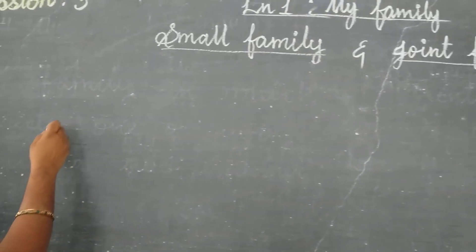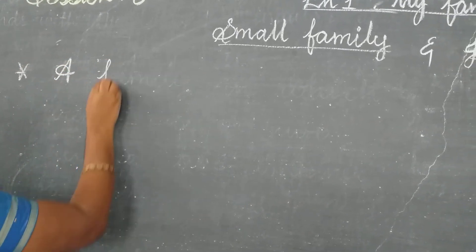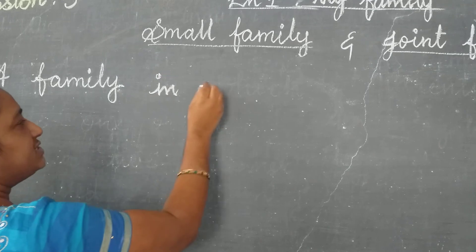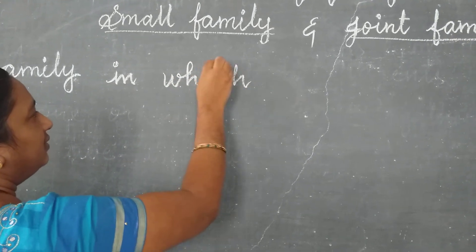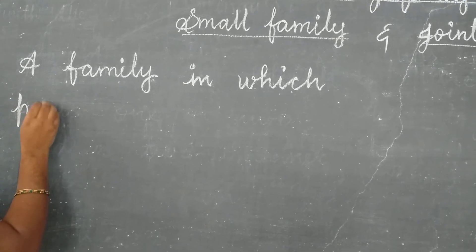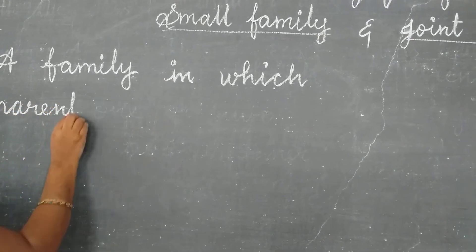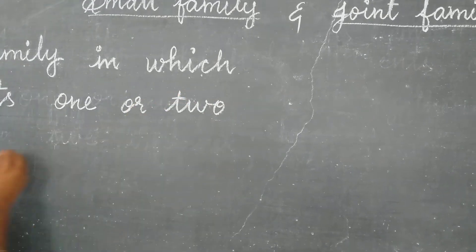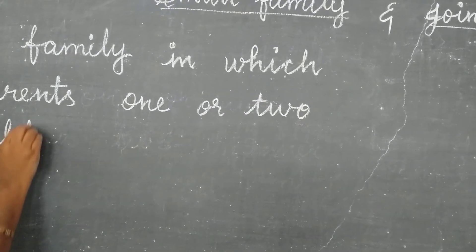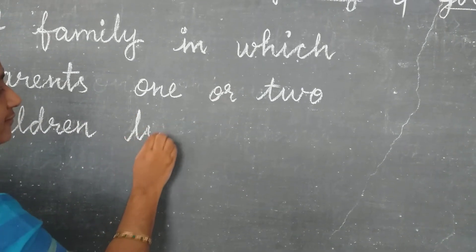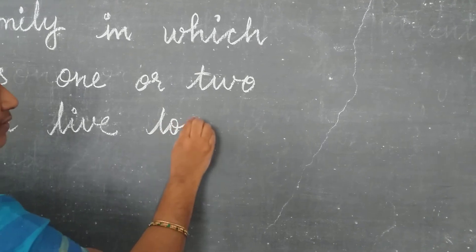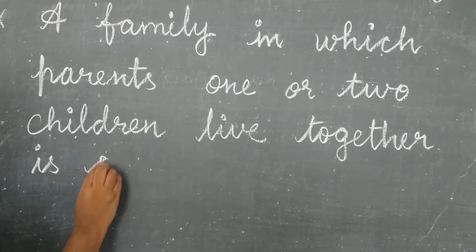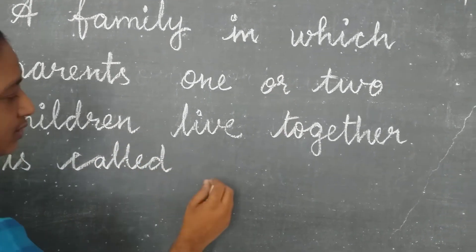What is small family? A family in which parents and one or two children live together is called small family.